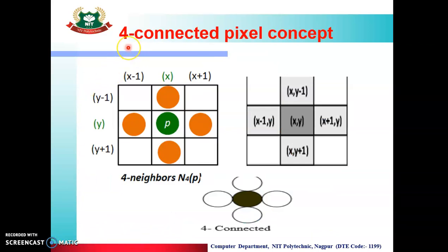Now, we will see the concept of four connected and eight connected pixels. Our screen is rows and columns. Each row and column intersection, means each box, is our pixel. So, these are the pixels in our screen.